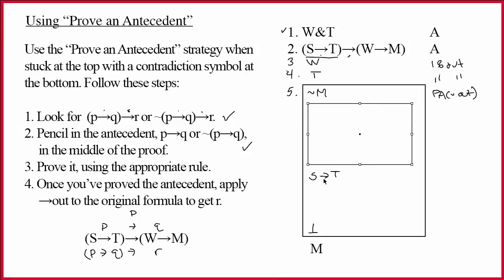The arrow of what I, of my antecedent, excuse me, the connective in my antecedent is an arrow. So I can prove it using arrow in. I put S at the top of this box. I put T at the bottom. That's line six. PA for arrow in.